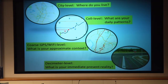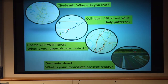It's not so hard to understand. At the city level, all you can answer are questions like, where do you live? Maybe I notice that you move across a couple of different cities, but I hardly know anything about you. At the cell level, I can start to mark your daily patterns — these eigenbehaviors. At the coarse GPS and Wi-Fi level, I can determine your approximate local context. But at an even more refined level — at a decimeter level — what other kinds of questions could you ask?